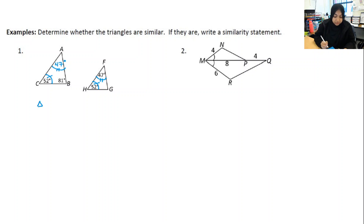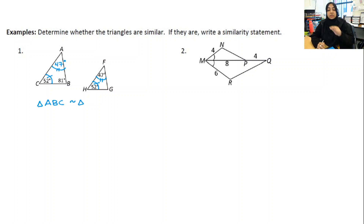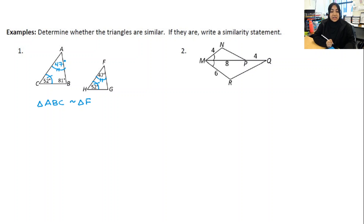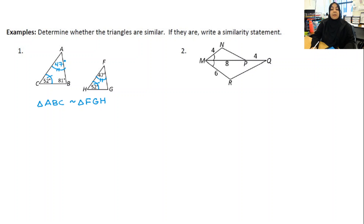Now notice 52 is congruent to 52, and 47 is congruent to 47. I've got two pairs of congruent angles in two triangles. I need to make sure I line up corresponding parts. Angle A was 47 degrees, so I need the other 47-degree angle, which is angle F. Angle B was 81 degrees, so angle G is 81 degrees. Angle C is 52 degrees and angle H is 52 degrees. So triangle ABC is similar to triangle FGH by angle-angle similarity of triangles.